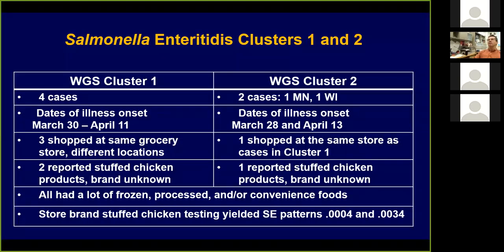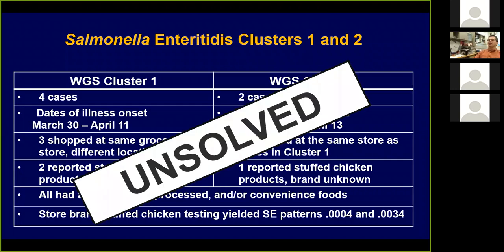When Minnesota looked at those clusters — here's cluster one and two, the two that are very similar — you could see there was some common denominator of store-brand stuffed chickens, a chicken Kiev type thing. The epi indicated it could be a common link — could have been a similar product made with the same ingredients. But at the end there was no specific source that could be identified to put those two clusters together.